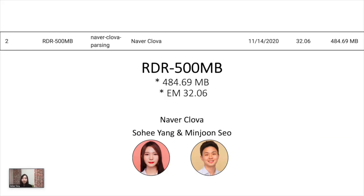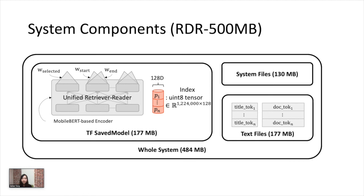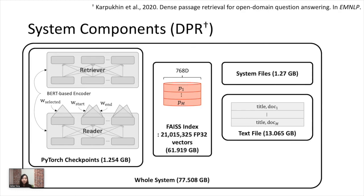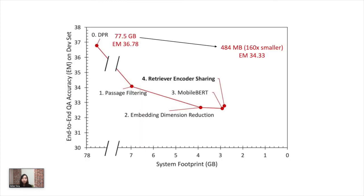Hi, I am Sohee Yang from Naver Clova. This is joint work with Minjoon Seo, and I am going to describe our system of 484 MB, whose automatic evaluation score of 32.06 is ranked second in the track systems under 500 MB of the efficient QA challenge. This is an overview of our system, which consists of a unified model of retriever and extractive reader, an index of dense vectors, text files, and system files. And this is actually a lightweight variant of a system with DPR, whose size is roughly estimated as 77 GB. In this presentation, we will show how we transformed this original system to reduce its footprint by up to 160 times with some drop in accuracy.